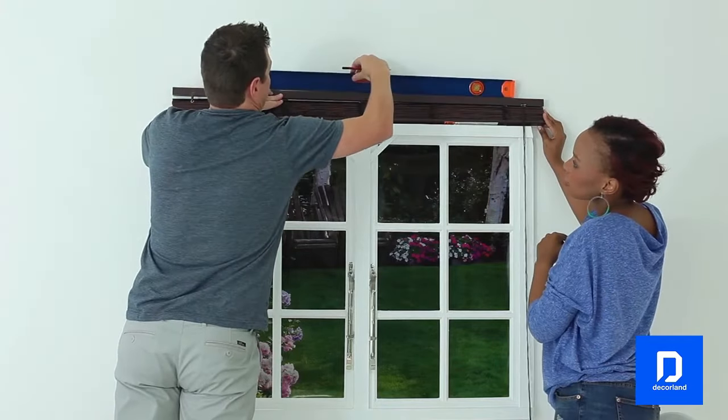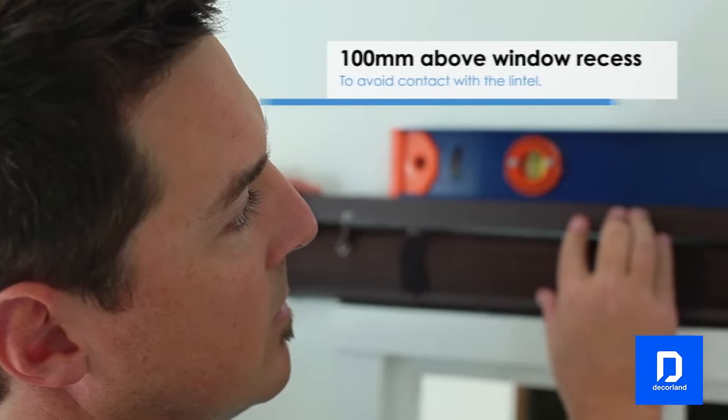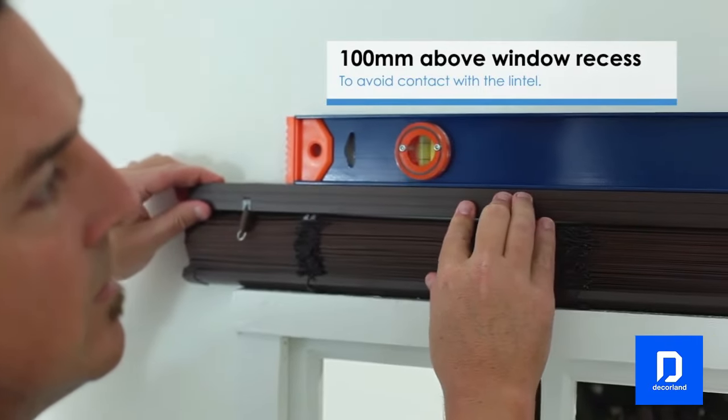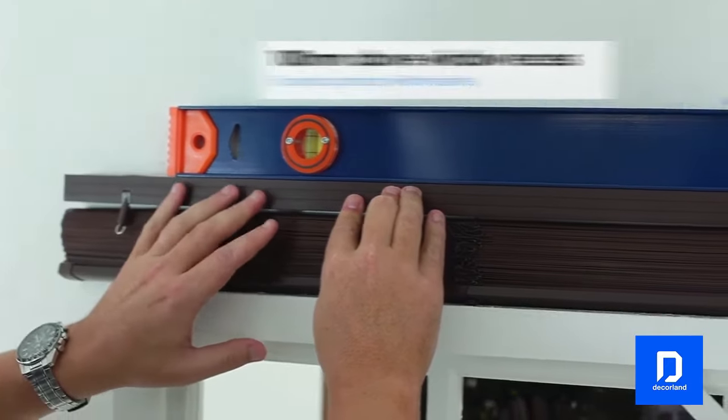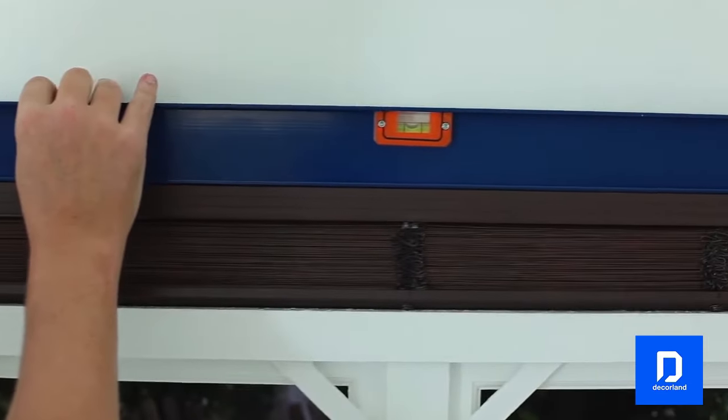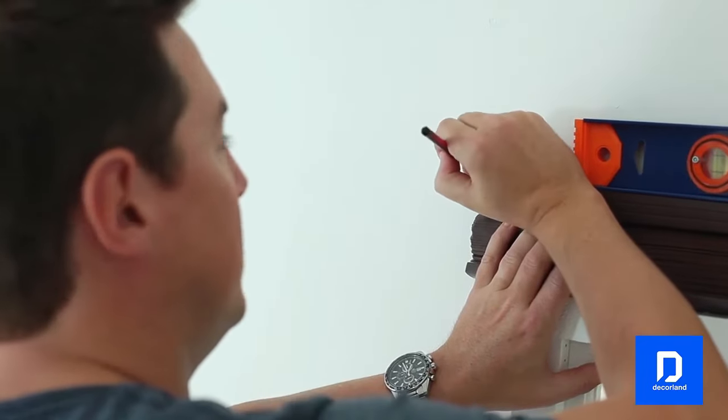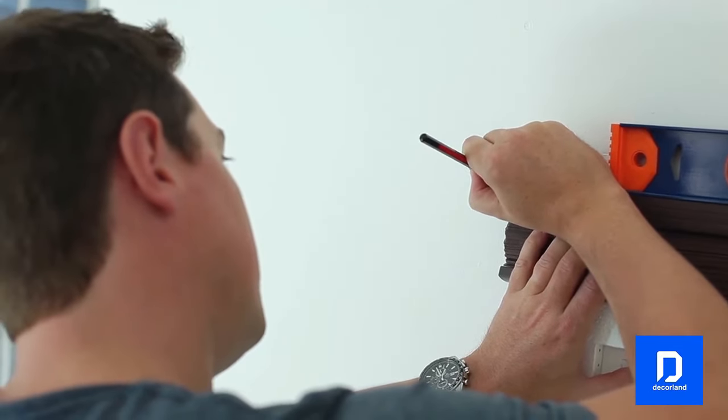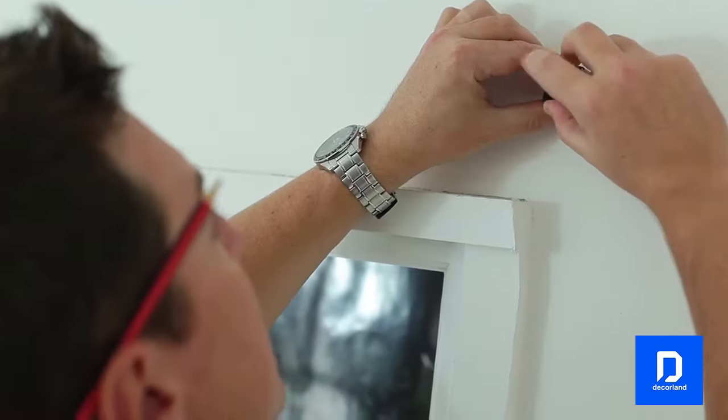Start by measuring up. Hold the blind centered and level about 100mm above the window recess to avoid the lintel. When you're happy with the spacing and positioning, measure to ensure accuracy. Then make small pencil marks on the wall in line with each end of the blind headrail.